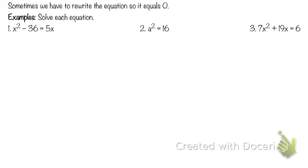We said we needed to have multiplication that equaled zero for the zero product property to work — zero has to equal zero, and the product has to be multiplication. On this problem, is this equal to zero anymore? No, everything we've seen has been equal to zero. Well, sometimes we have to rewrite the equation so it does equal zero.